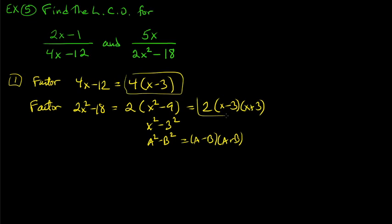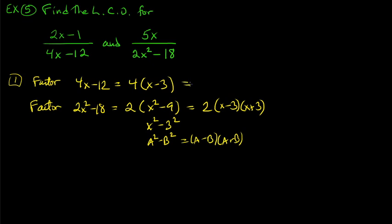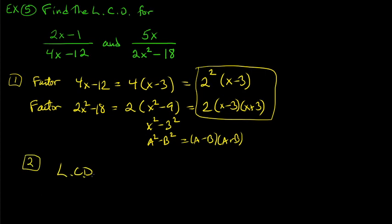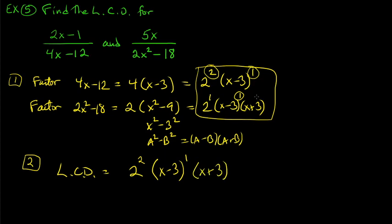Now that both are factored completely — remembering that 4 is 2 squared — step two: write the LCD. For 2, we choose exponent 2 over 1, so we use 2 squared = 4. For (x−3), both exponents are 1, so we use 1. For (x+3), the exponent is 1. The LCD is 4(x−3)(x+3).